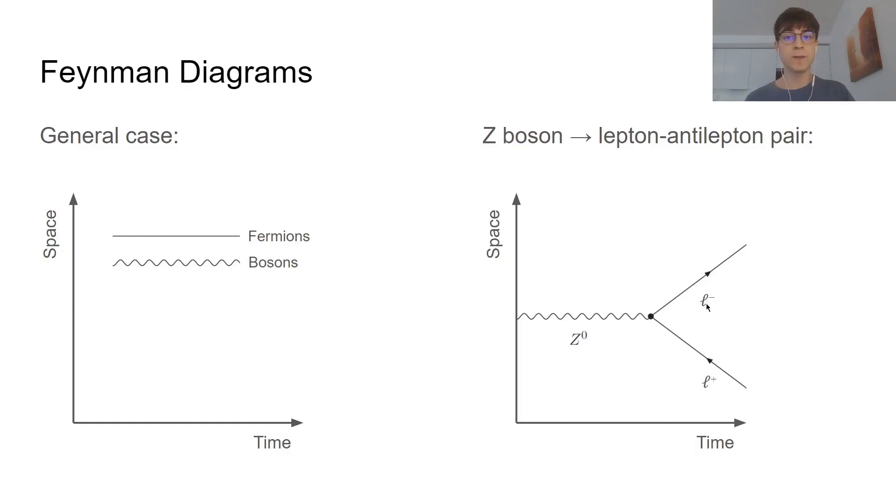We know these two leptons are moving in space and time since they're represented by a diagonal, which means that they're moving both horizontally and vertically.